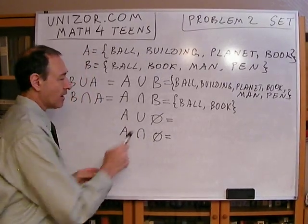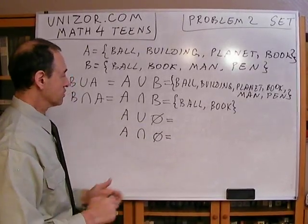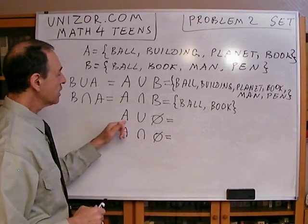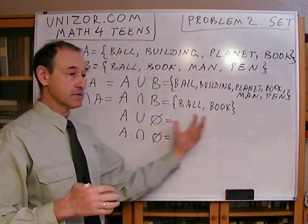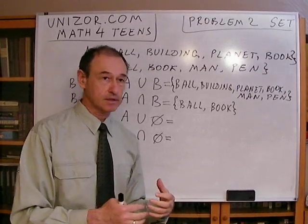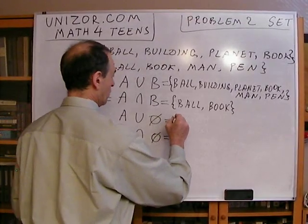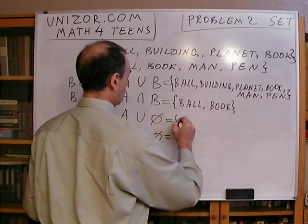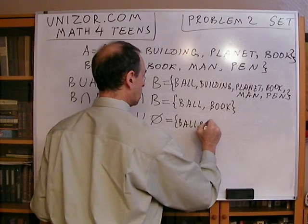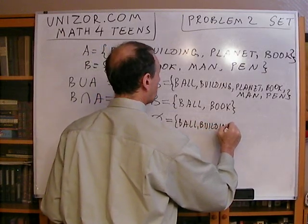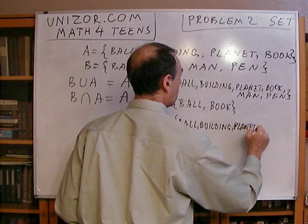Now, these are, well, they might look a little strange. But what it means, let's just think about this. We are unionizing A with an empty set, which means we are combining elements from one set and another set. So, all elements of A obviously will be included, which are wall, building, planet, and book.